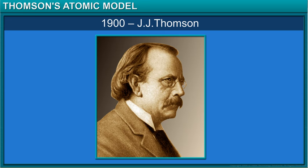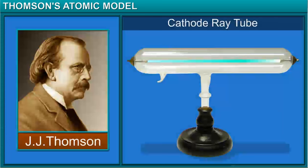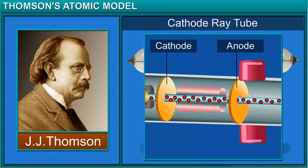Around the year 1900, J.J. Thomson conducted experiments on the beams of particles inside a glass tube called a cathode ray tube. He found that the particles were attracted to the positive terminal of the tube.